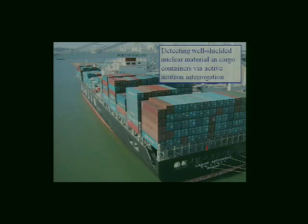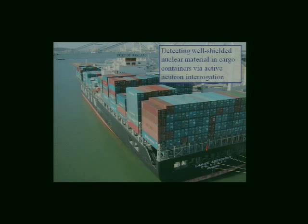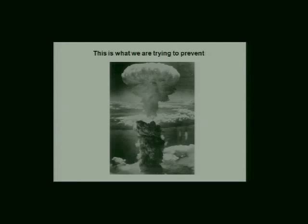One worry is that someone will attempt to smuggle either a fully constructed nuclear weapon or fissionable material into our country and detonate it here. One potential avenue is cargo containers. If you go down to the port of Oakland, you'll see ships like this — a typical ship will have several thousand containers, with at least as many below the water line as above. Each container is either 20 or 40 feet long and can contain just about anything.